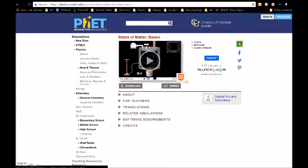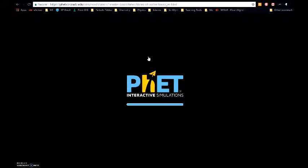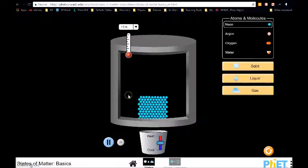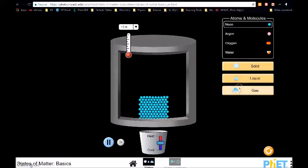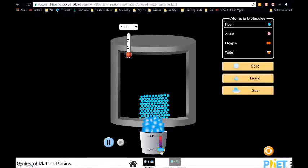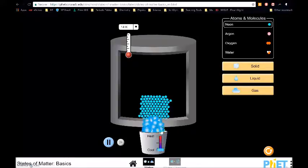This simulation runs in HTML5, which means it's compatible with any device, computer, laptop, tablet, or cell phone. So we're going to press Play, load the simulation, and we're going to go to States of Matter here. And we have various atoms and molecules we can use, and then we have tabs for the three states of matter, plus a heat control here so we can add or remove energy to make these particles do different things.